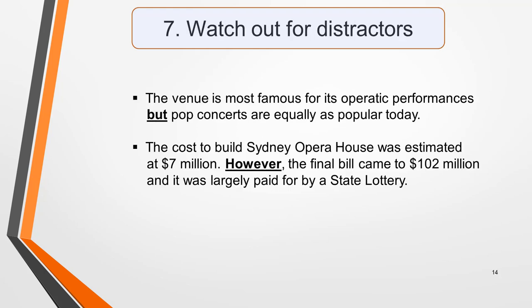The examiners may try and catch you out with distractors. A distractor is a word or a phrase that changes or corrects the original piece of information given. So, you may be given an answer and then have it taken away again. Here are two sample sentences containing distractors. I've highlighted the relevant words. The venue is most famous for its operatic performances, but pop concerts are equally as popular today. The cost to build Sydney Opera House was estimated at $7 million. However, the final bill came to $102 million and it was largely paid for by a state lottery. The use of but and however are particularly common distractors. But there are many different words and phrases that can be used to change or correct a piece of information, so be alert for them.